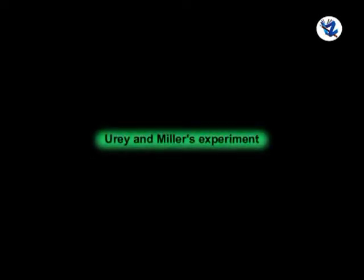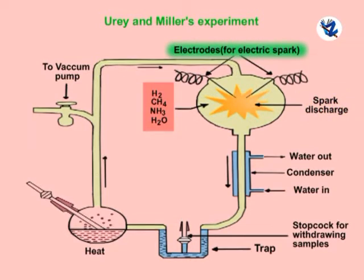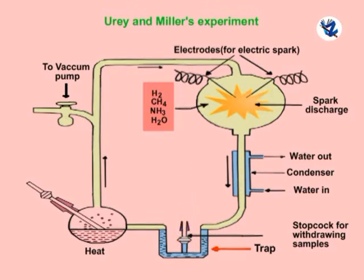Urey and Miller's experiment in support of chemical evolution: Urey and Miller's spark discharge apparatus is a closed system of glass except for tungsten electrodes. It has a large spark discharge glass chamber fitted with tungsten electrodes, a flask for water boiling, a side tube connected to a vacuum pump, a cooling jacket and a U-shaped trap. They first evacuated the entire apparatus and made it sterile. Water was partially added to the flask.